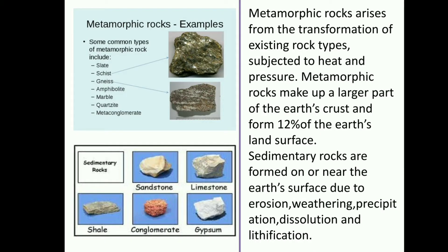What are metamorphic rocks? Metamorphic rocks arise from the transformation of existing rock types subjected to heat and pressure. Metamorphic rocks make up a large part of the earth's crust and form 12% of the earth's land surface. Examples include slate, marble, etc.